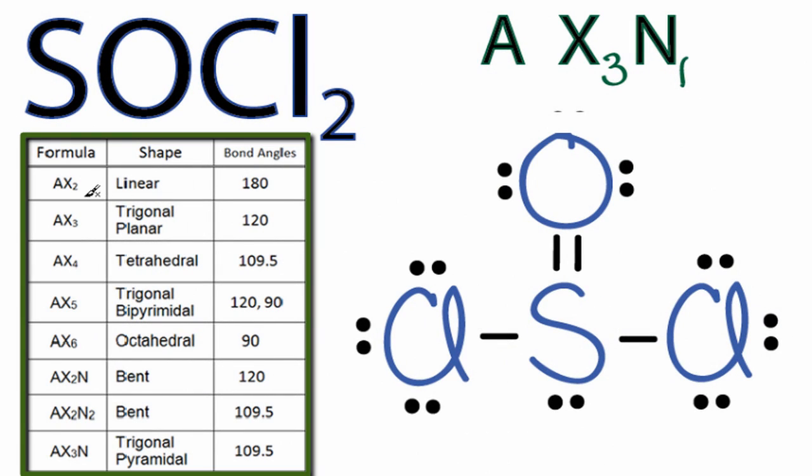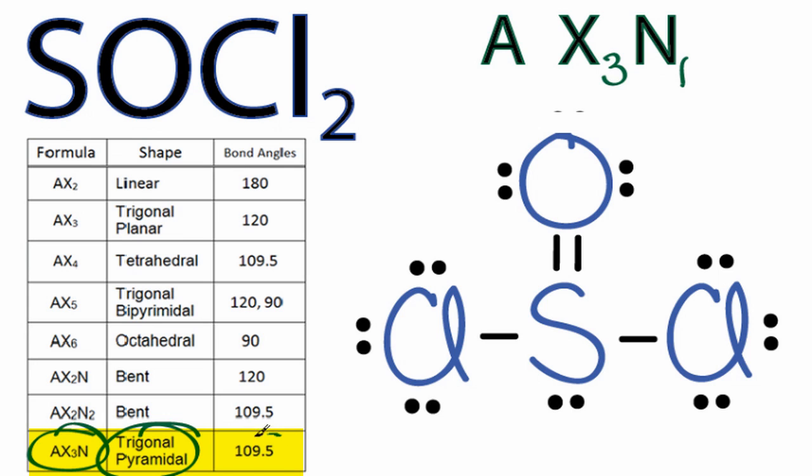So going down our table, we have AX2, AX3, AX2N, AX2N2, and way at the bottom, AX3N. That's what we're looking for, and that is trigonal pyramidal. And we can see the bond angle, 109.5.